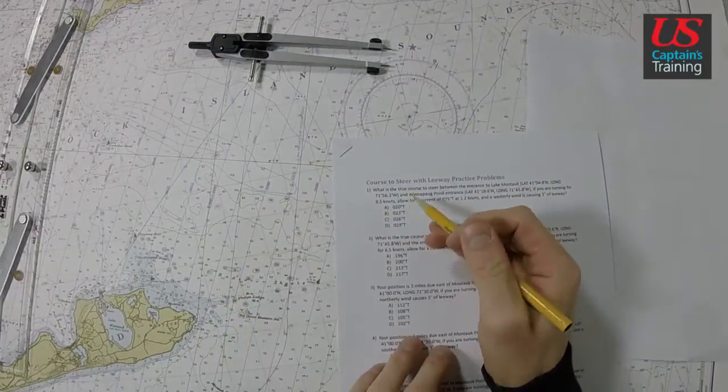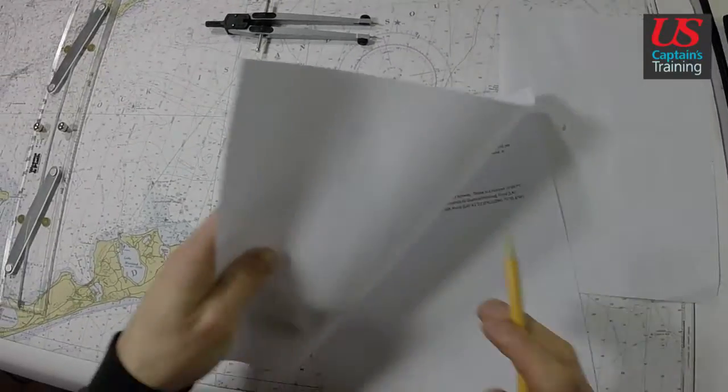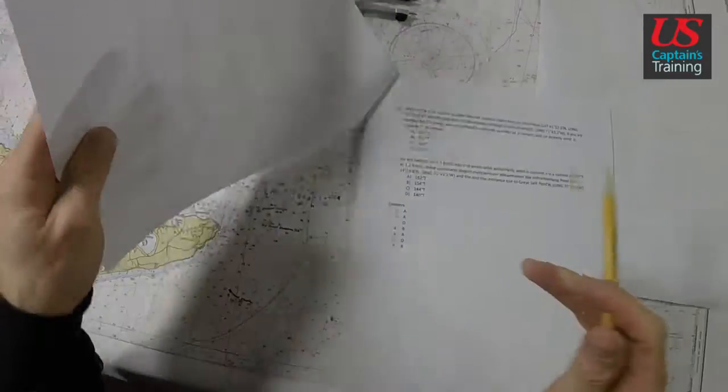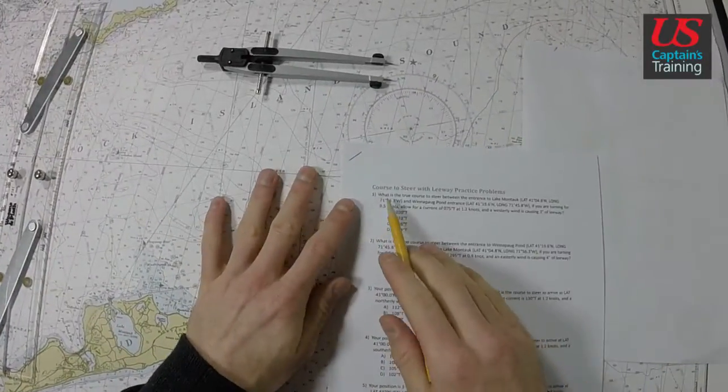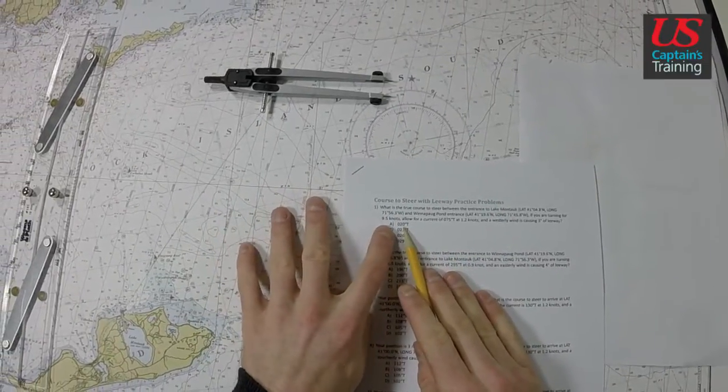A, 20. Let's see if we're right. On number 1, we're saying it's A. Number 1 is A. So the correct answer to course to steer with leeway, practice problem 1, is A: 20 degrees true.